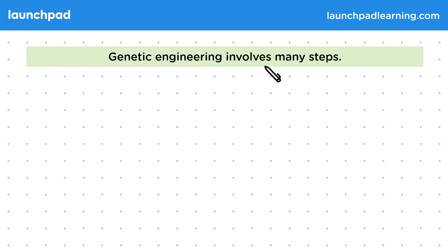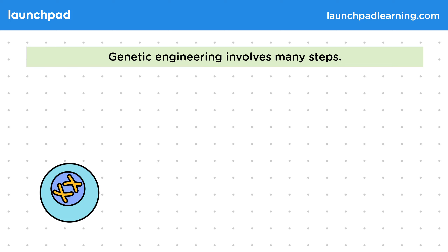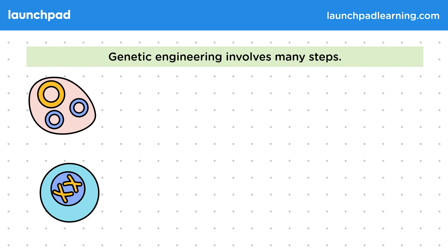Genetic engineering involves many steps. You start with a cell that has a desired gene — in this case the human cell — and a cell that will help to transmit that gene into other cells, in this case a bacterium. This example is using genes from a human cell, but the desired gene could be inside any cell, including plant cells, animal cells or microorganisms.